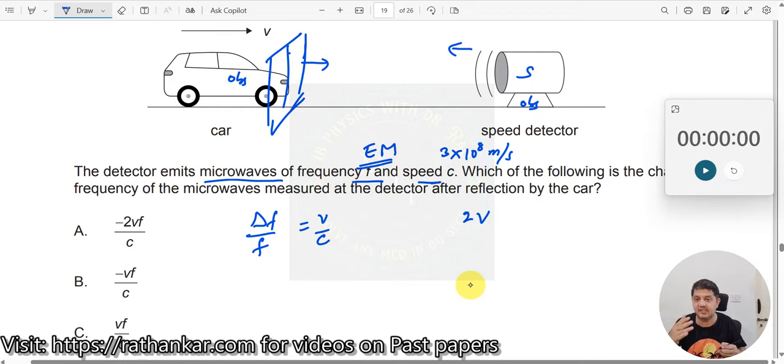As a result of it, the image is also moving towards you and as a result, you see the velocity will get doubled here. Velocity will get doubled here.